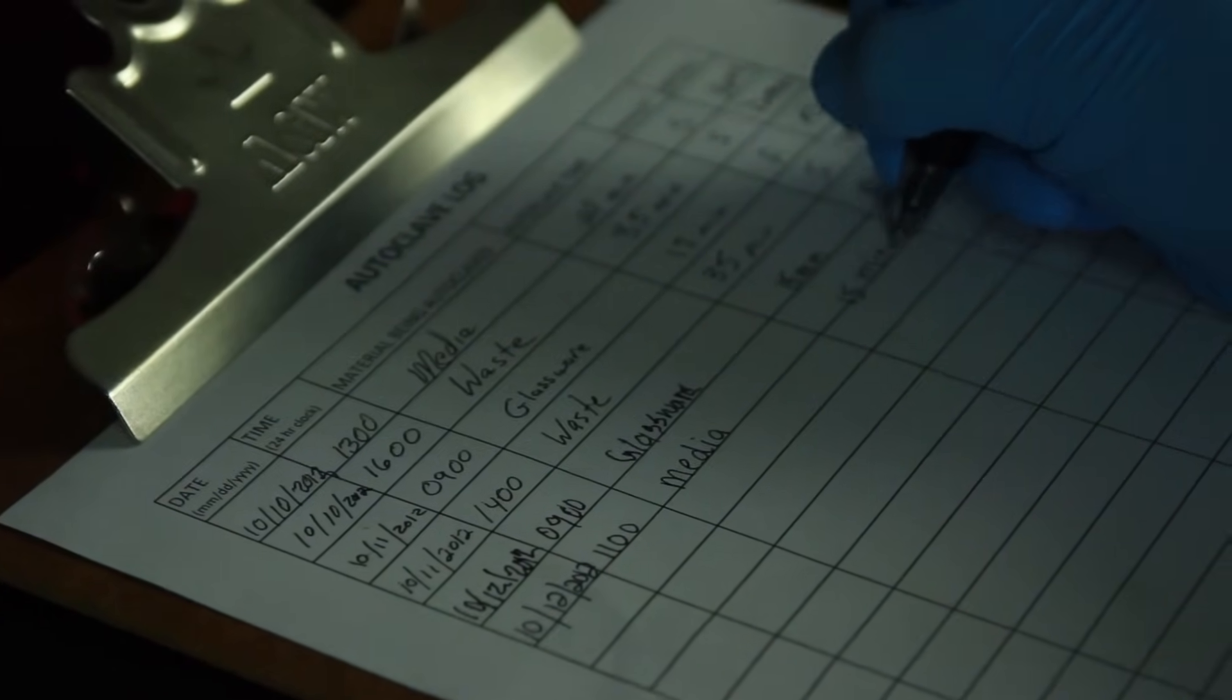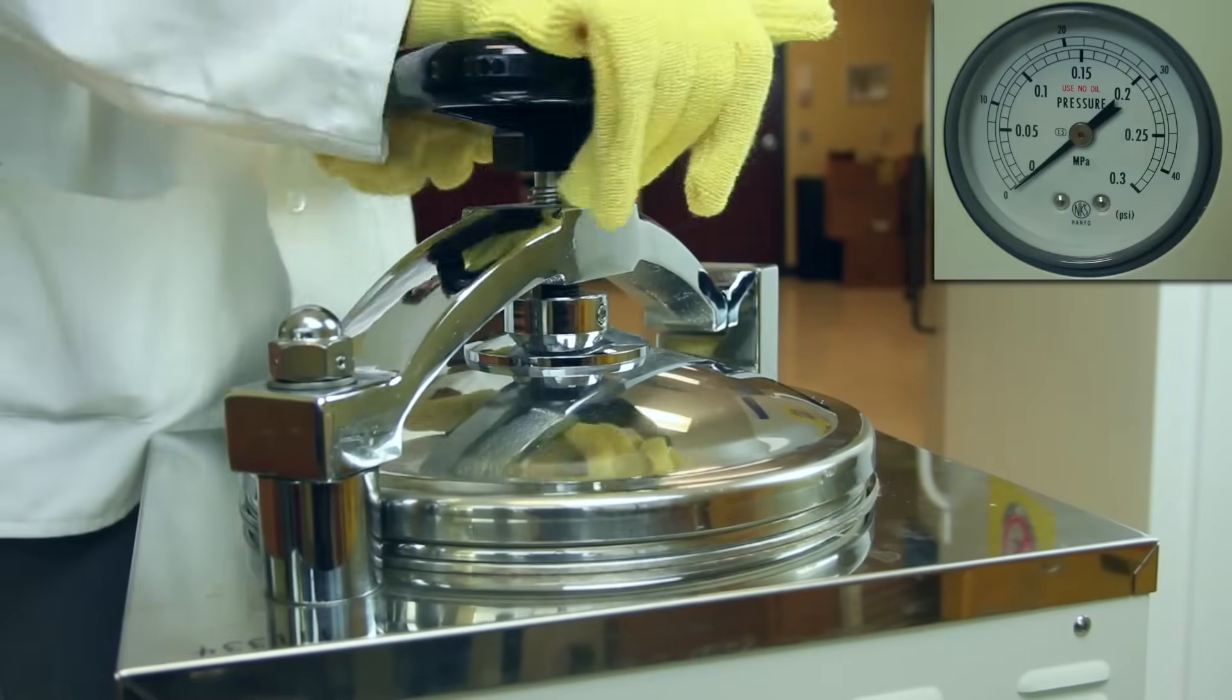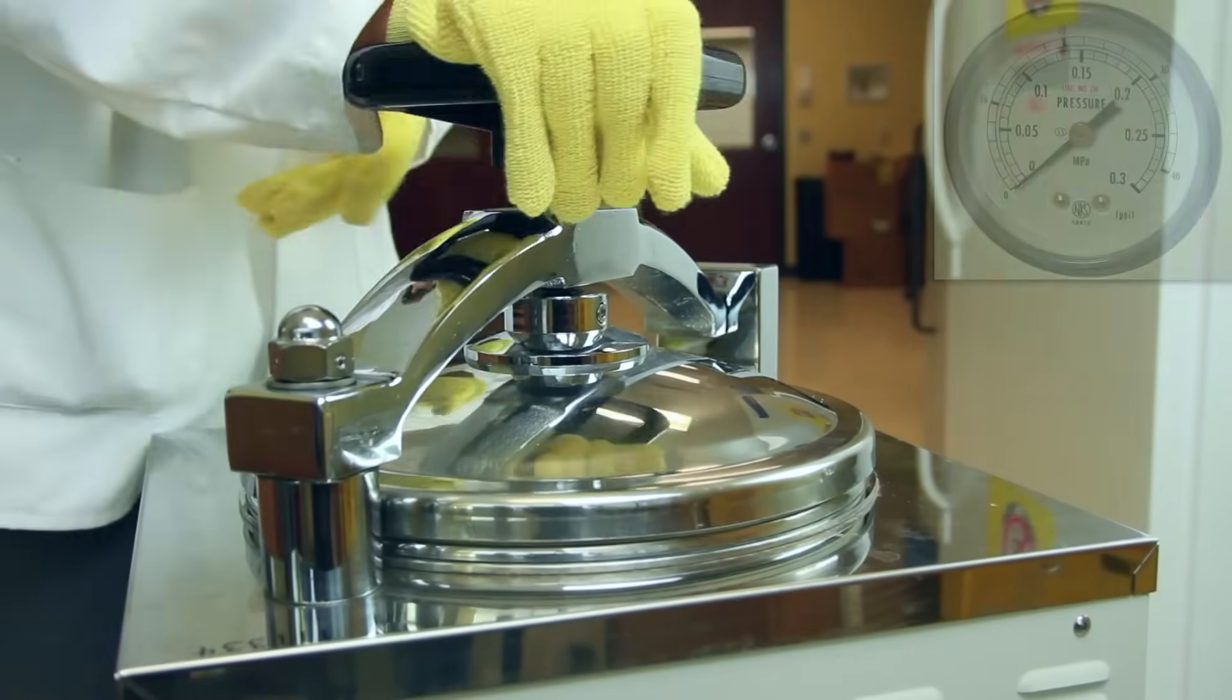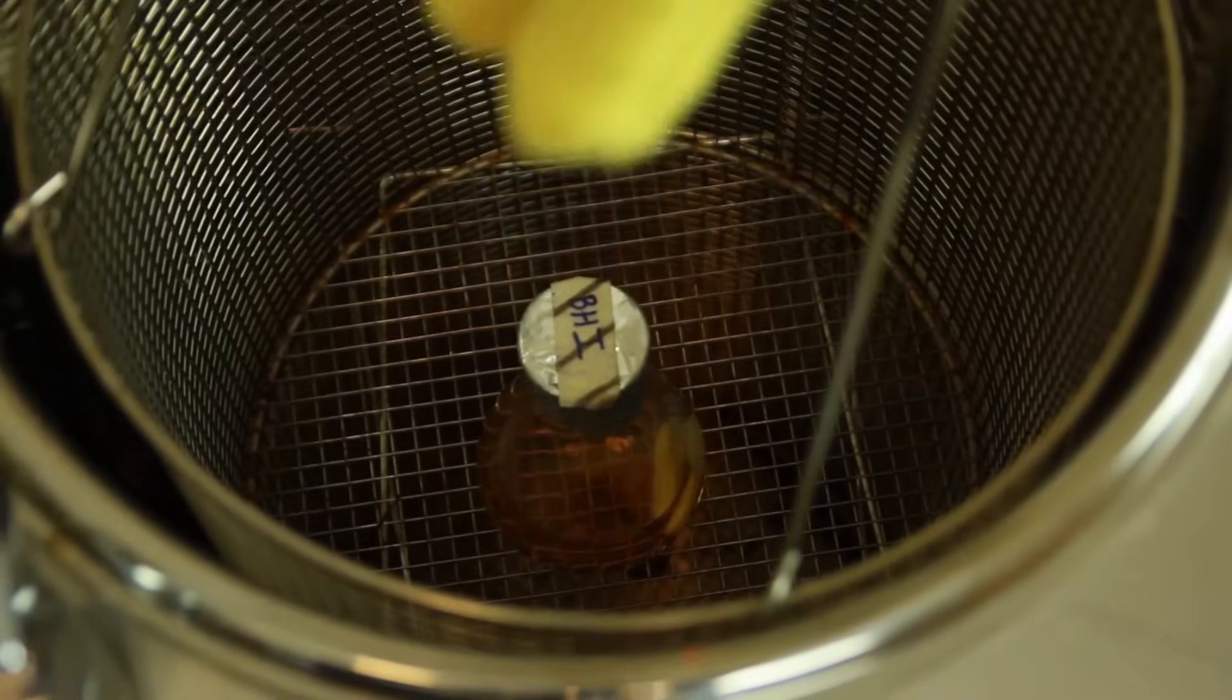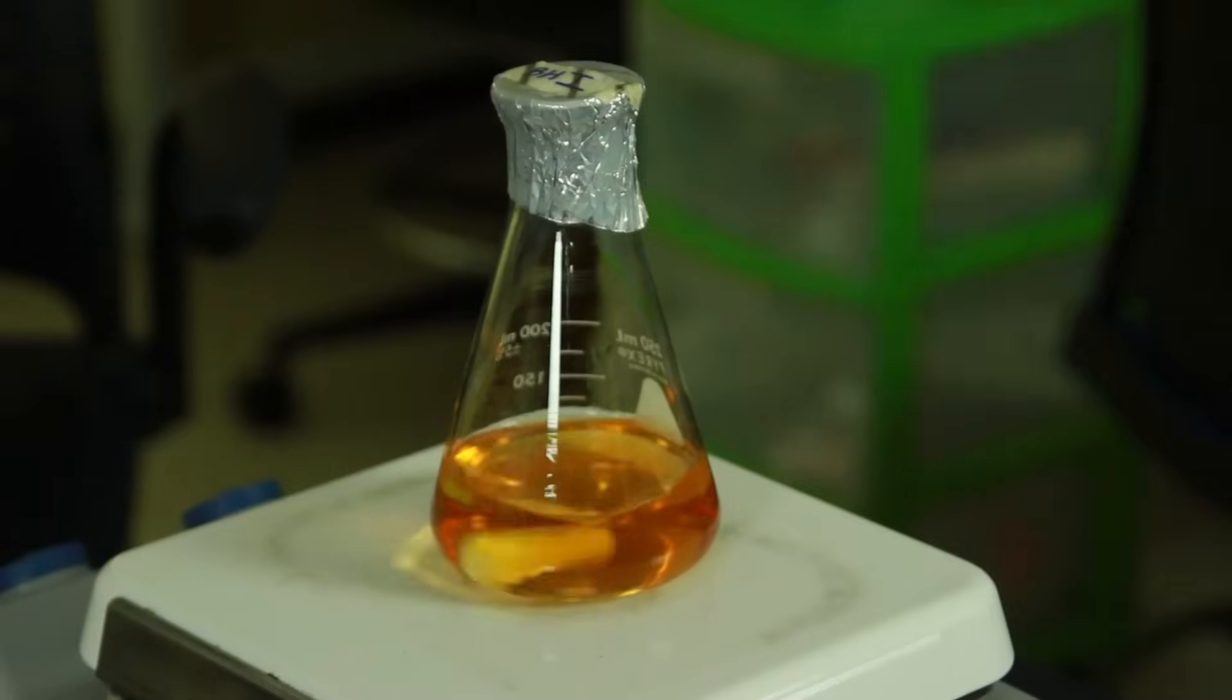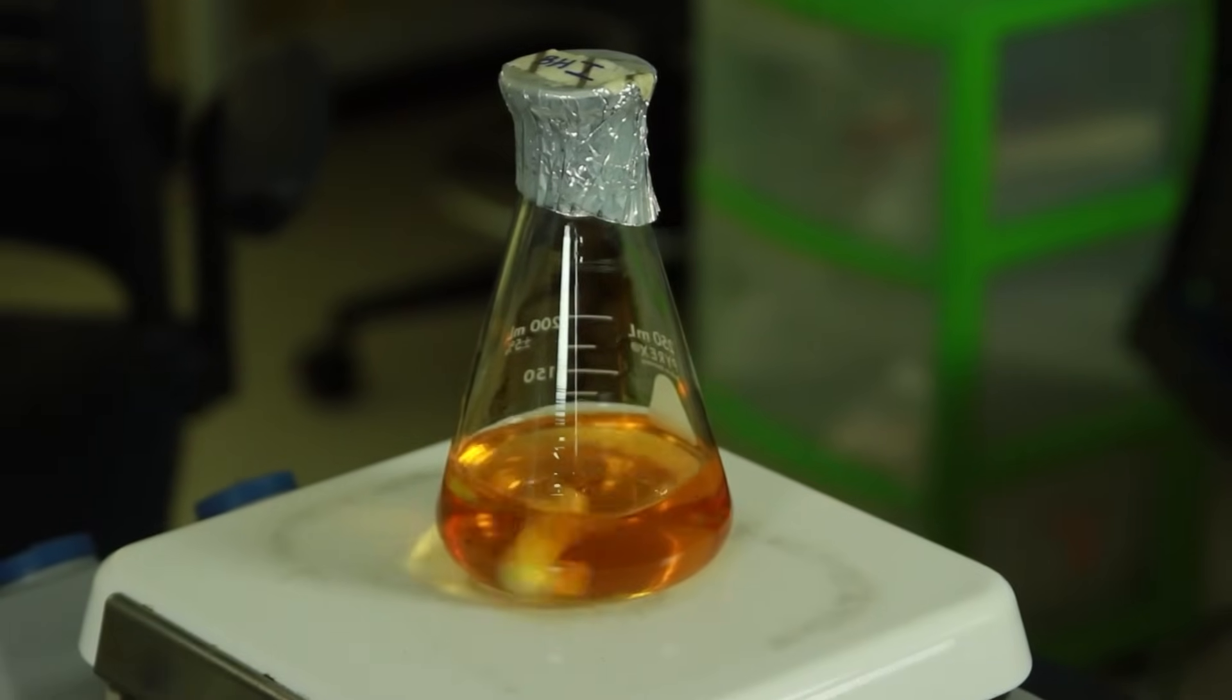Once the cycle ends and the pressure gauge reads zero psi, slowly open the door wearing heat-resistant gloves. The black lines are visible on the autoclave tape, indicating that the proper temperature was reached.